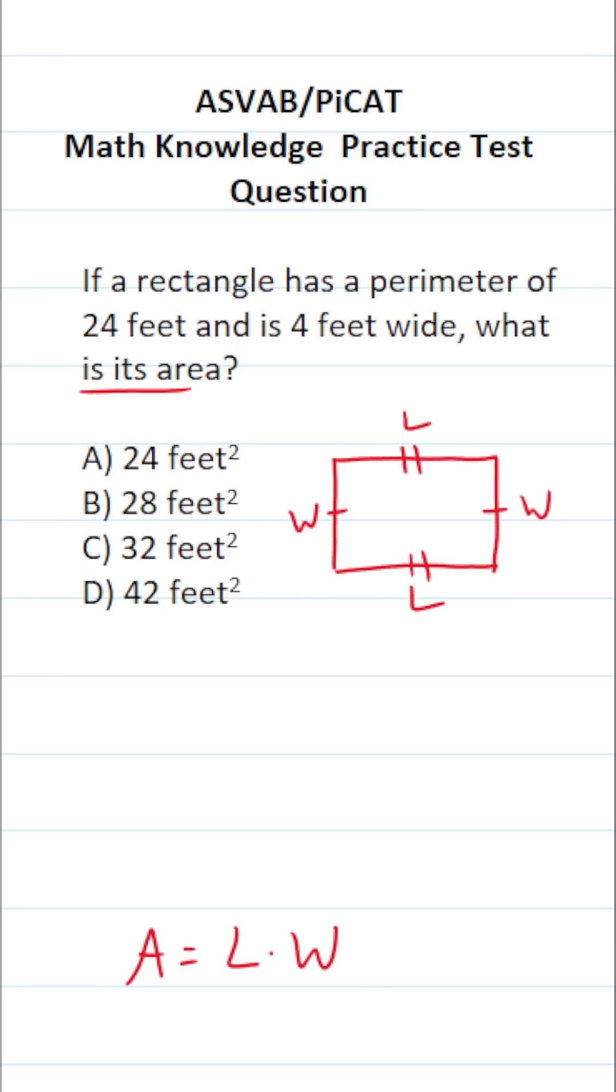Now, how do you find the perimeter of any polygon? You simply add up all of its sides. So to find the perimeter of this rectangle, we're just going to add all these sides together. So if you start here and go around, that's going to be width plus length plus width plus length.